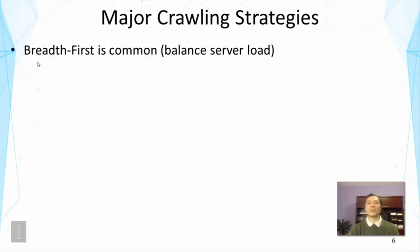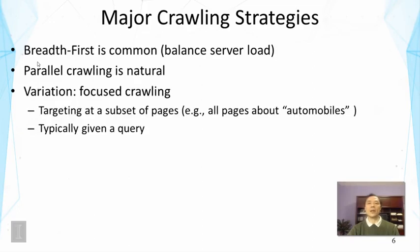The major crawling strategies: in general, breadth-first is most common because it naturally balances server load, so you're not repeatedly probing a particular server. Parallel crawling is also very natural since this task is easy to parallelize. One interesting variation is focused crawling, where you crawl only pages about a particular topic — for example, all pages about automobiles. This typically starts with a query to retrieve results from a major search engine and then gradually crawls more from those results.